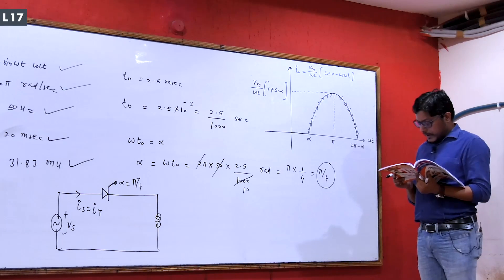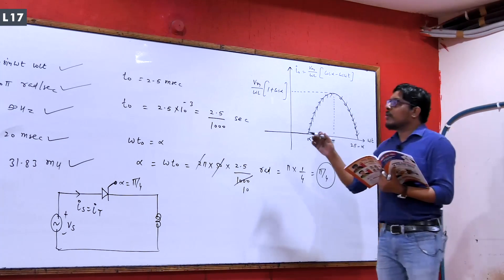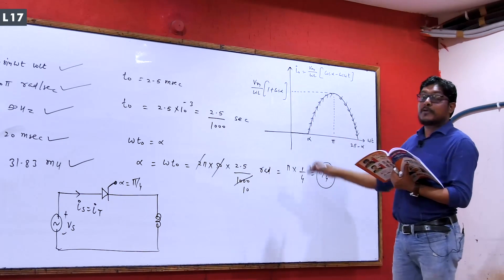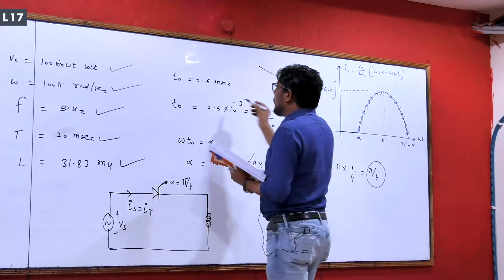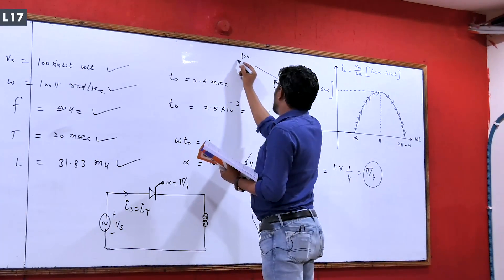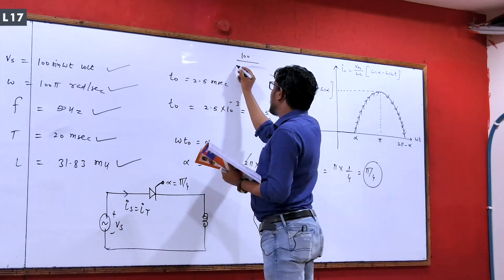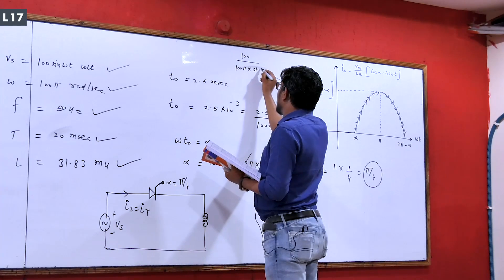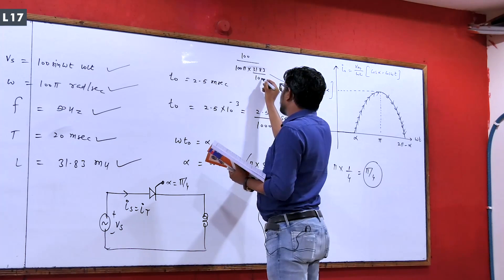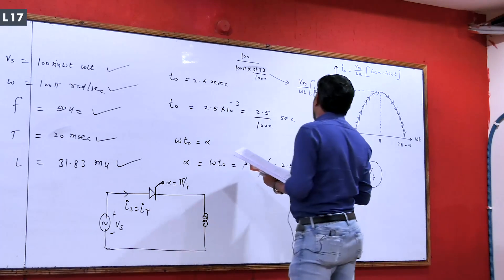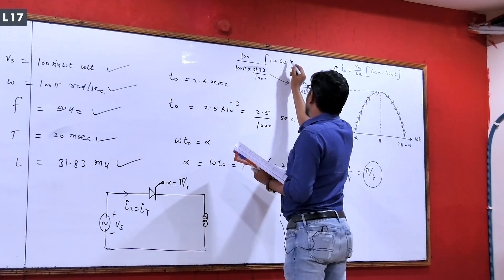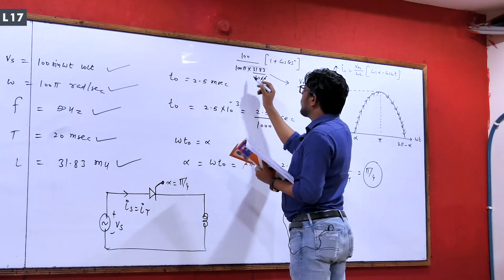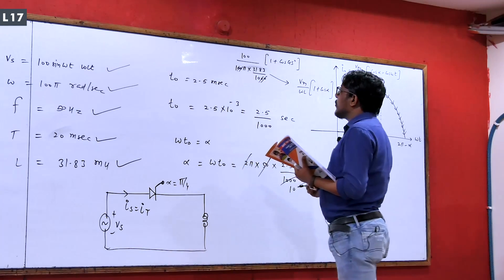The question asks for the numerical peak value of inductor current. Vm equals 100 volts, omega equals 100π, L equals 31.83 millihenry equals 31.83 divided by 1000 henry. Then 1 plus cos alpha: alpha is 45 degrees, cos 45 equals 1 by root 2 equals 0.707. The 100 from Vm and 100 from omega cancel out, giving 1000 upon pi, and then divided by 31.83 with factor 1.707.